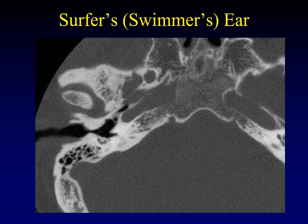When there are multiple osteomas encroaching on the external auditory canal from all sides, that's usually from chronic exposure to cold water — that's why it's called surfer's or swimmer's ear. You can see a mound of osteoma arising from each side, practically going to meet in the middle and occlude the external auditory canal. Numerous osteomas is what we call swimmer's ear.